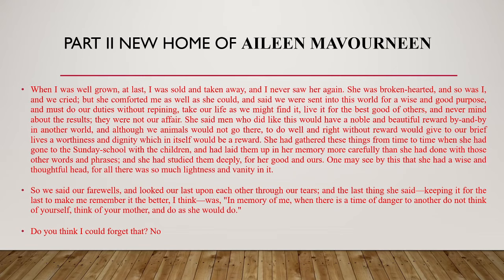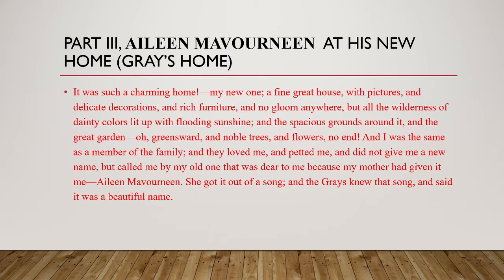In the second part, Aileen comes to her new home — the home of the Grey family — where she finds a very great change in her life. It was a charming home with a fine great house, pictures, delicate decorations, rich furniture, sunshine, a garden, greenwood, noble trees, and flowers. Members of the family were very loving towards Aileen and called the dog by the same name, Aileen, taken from a song.